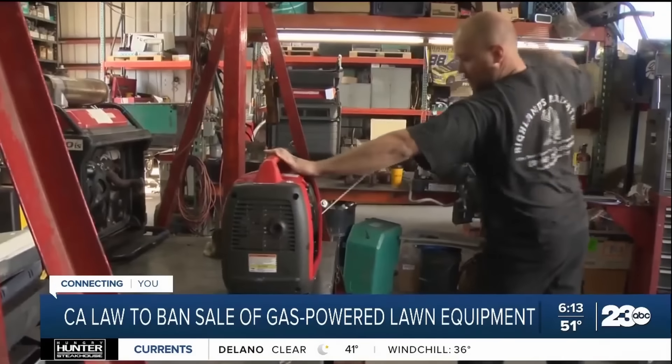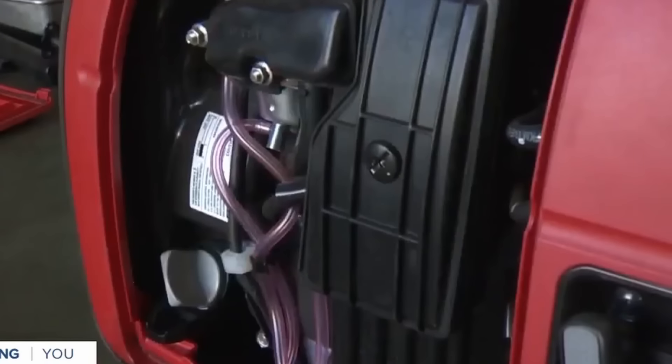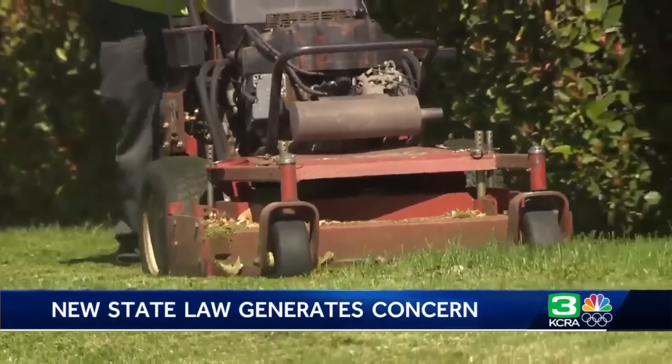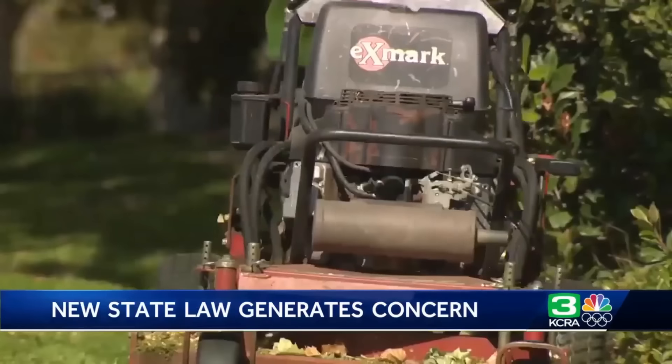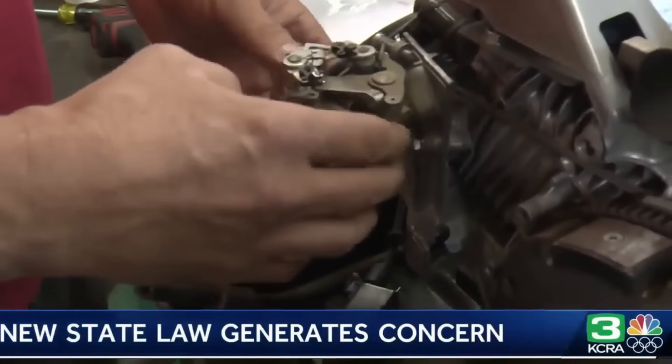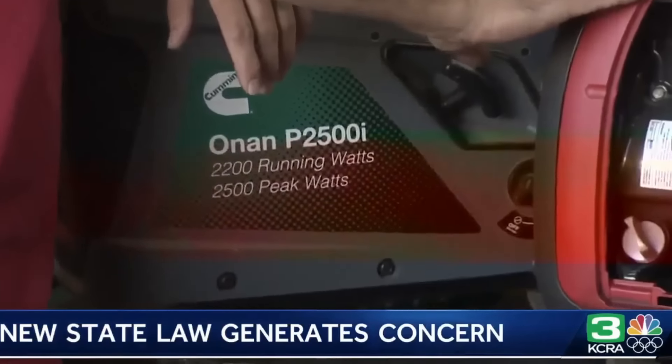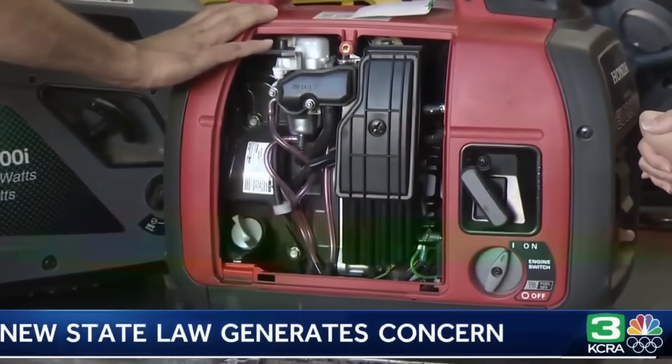Powered lawn equipment like lawnmowers and generators are being phased out here in California. Governor Newsom signing the new law over the weekend ordering state regulators to ban the sale of new gas-powered equipment by 2024. The state this month banning the sale of gas-powered lawnmowers and leaf blowers by 2024. Today we learn sales of gas portable generators that run under 25 horsepower will also be restricted by 2028.